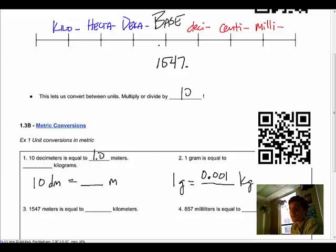So we got to go one, two, three spots. My decimal goes one, two, three spots and lands right here. So our answer is 1.547 kilometers, and that's again, swing that decimal.